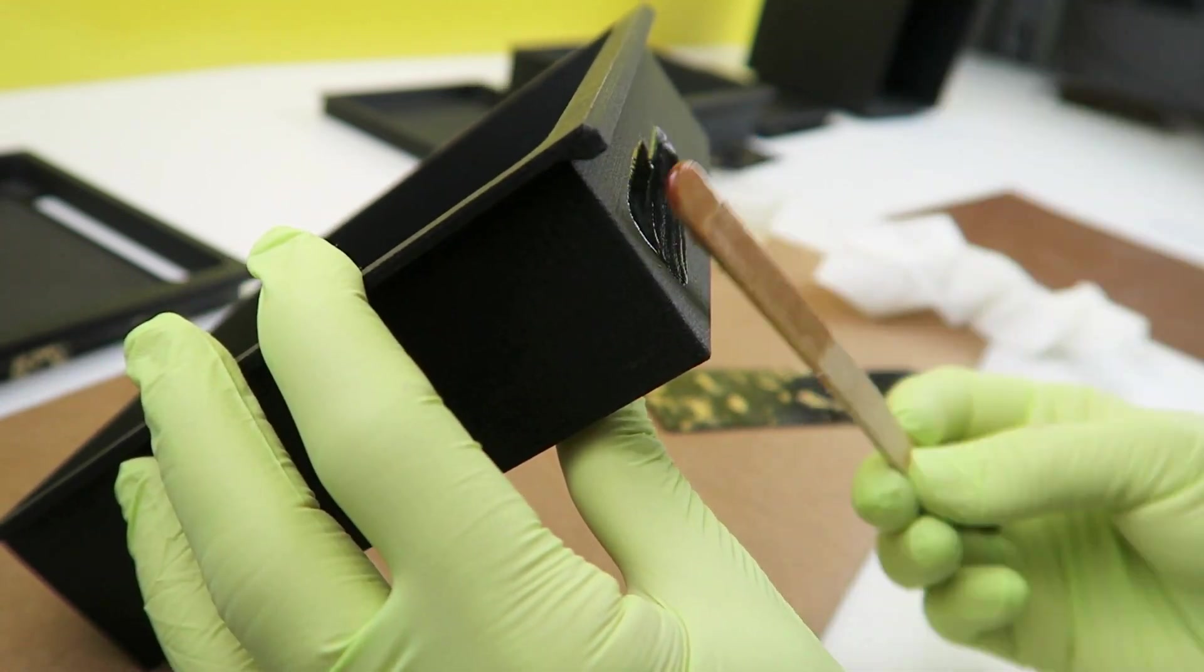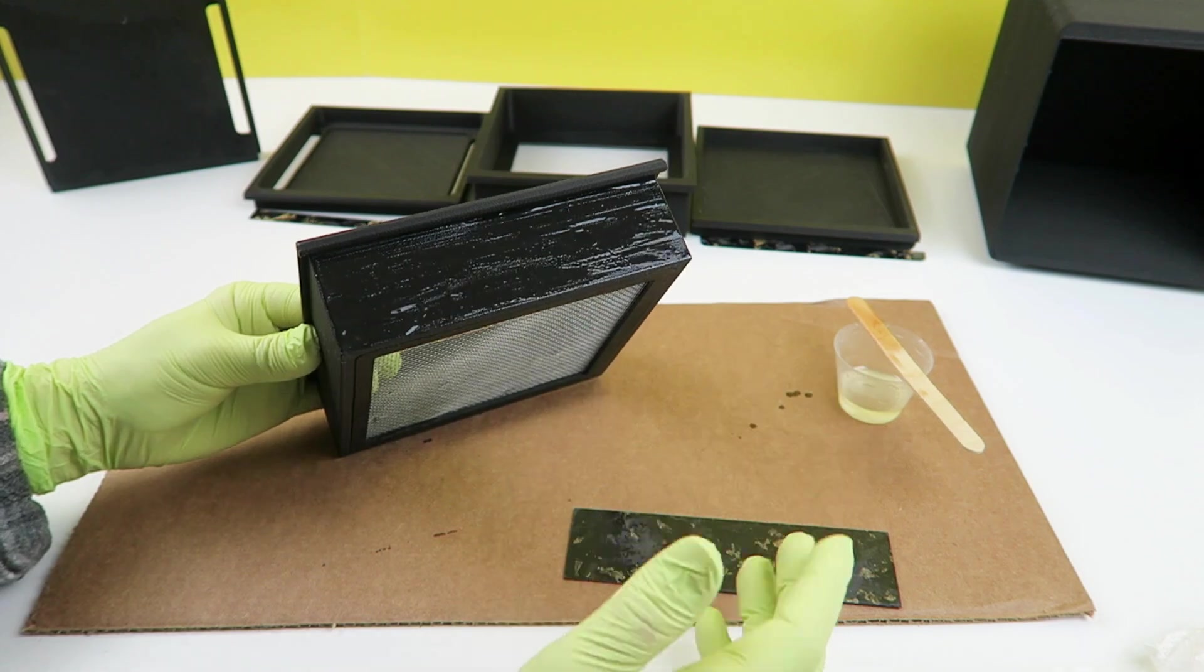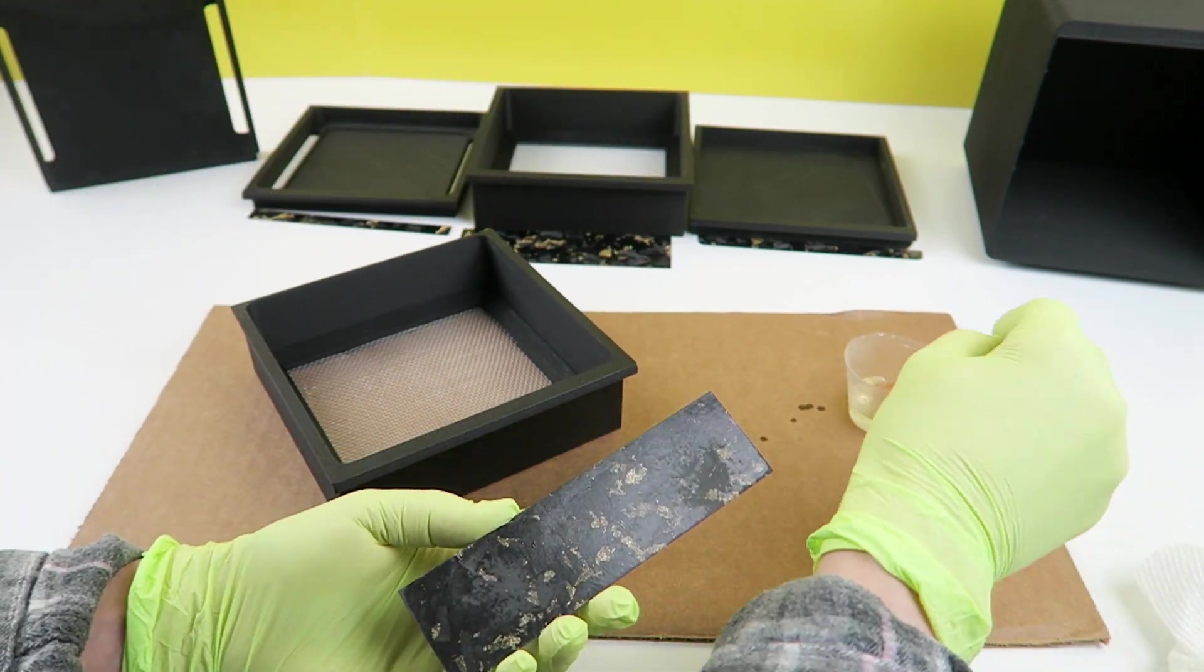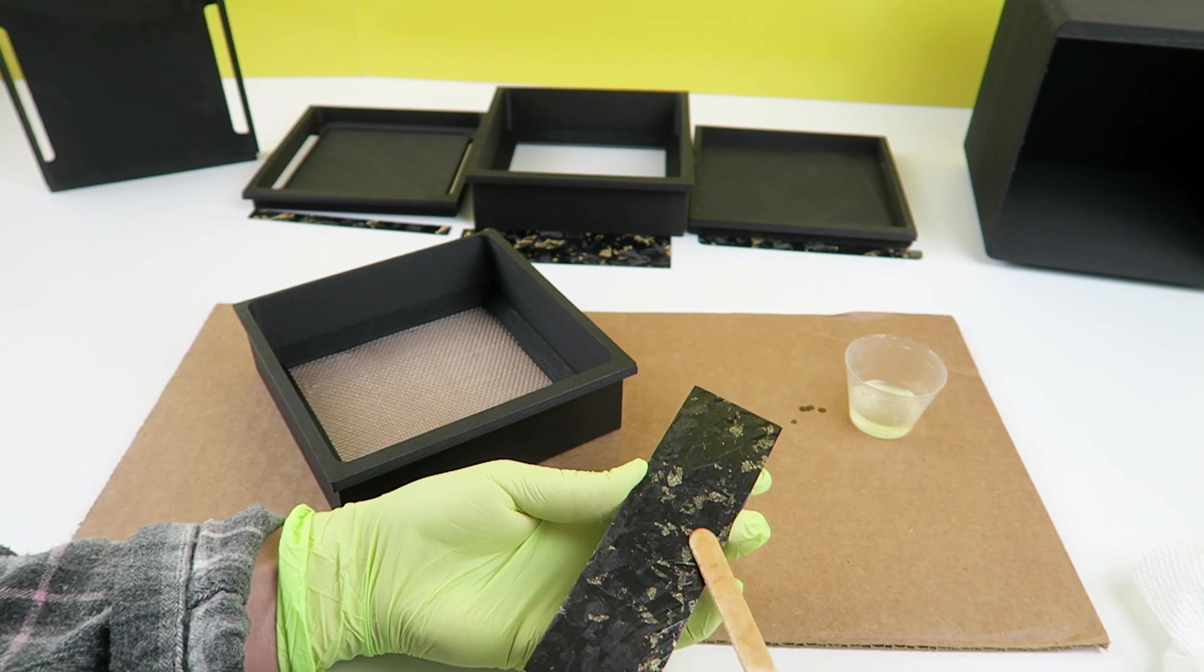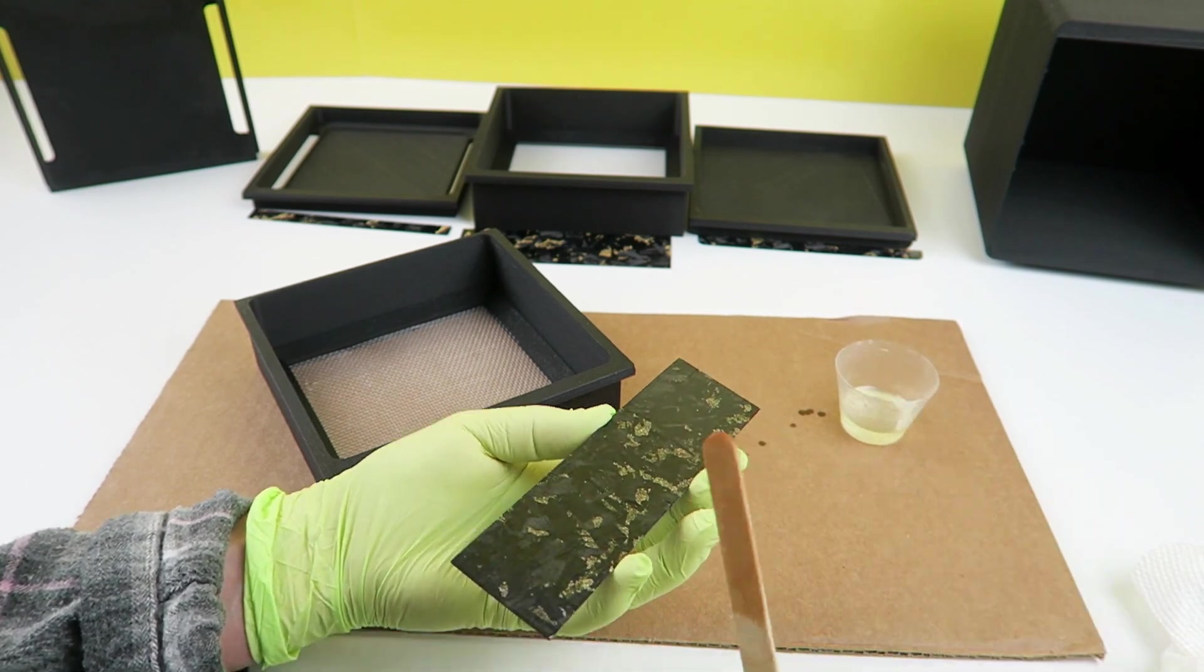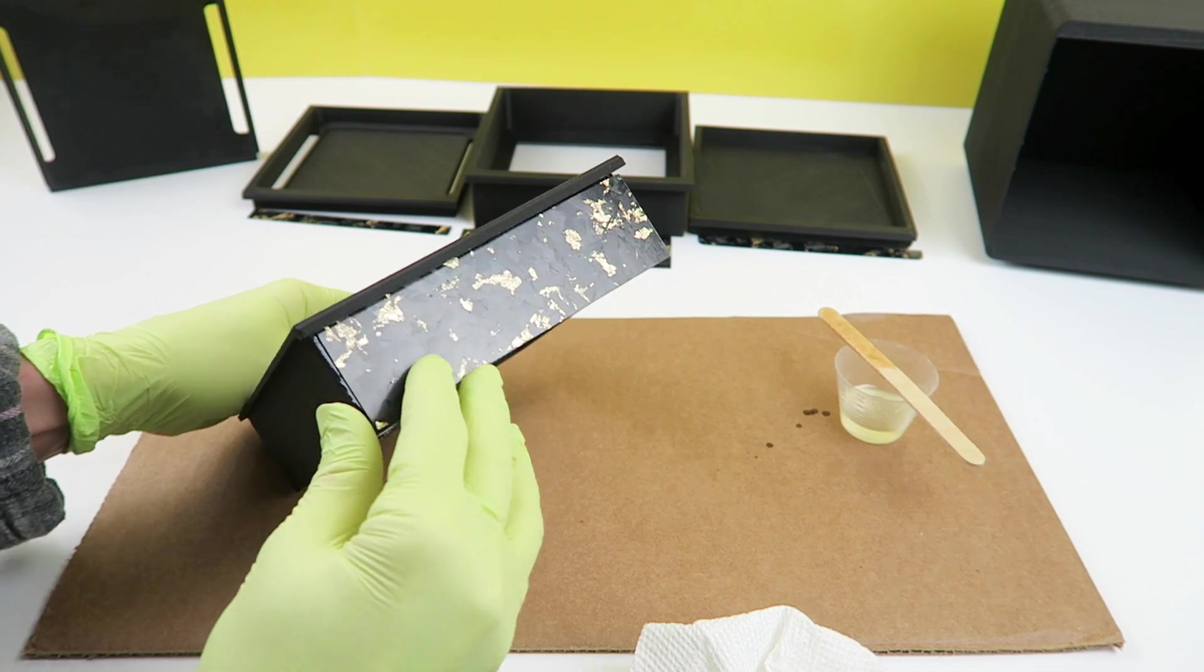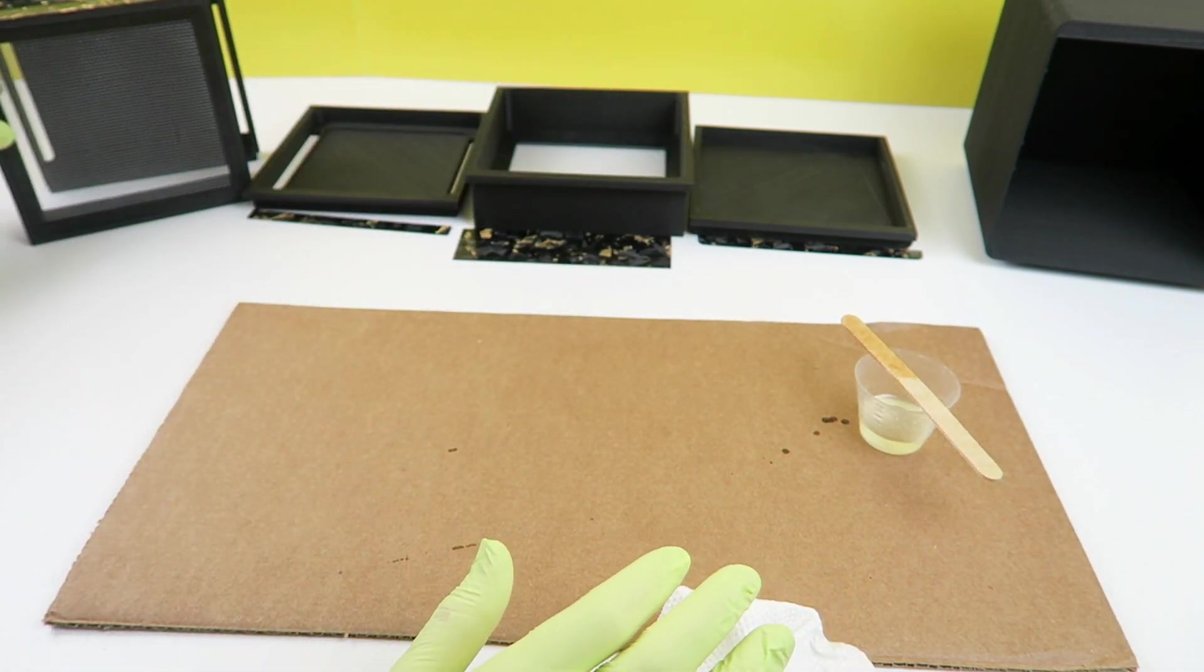Spread a thin layer of epoxy onto both surfaces and gently press the forged carbon veneer into place. Leave the trays set vertically on a level surface to cure.